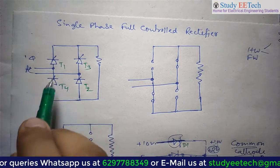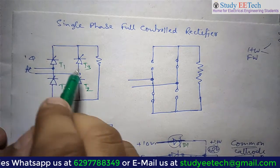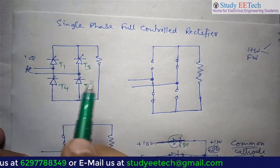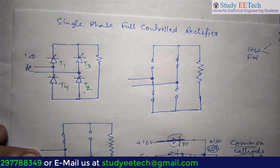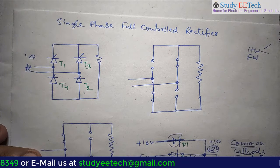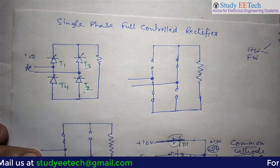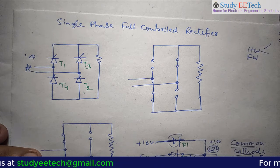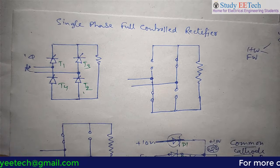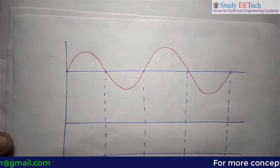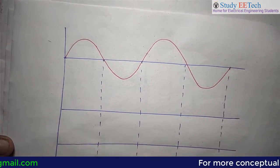The thyristors are named T1, T2, T3, and T4. Diagonally, the thyristors will conduct. Let us understand the circuit operation through waveform analysis.